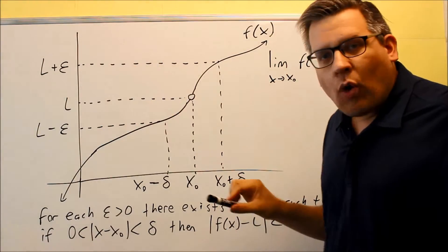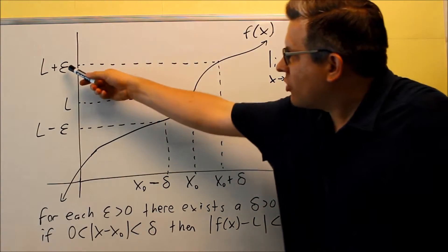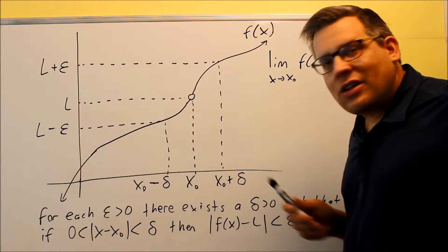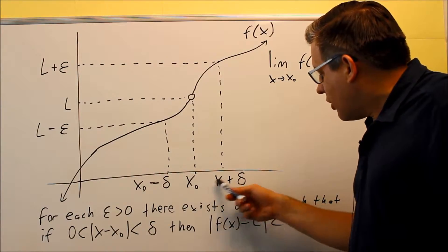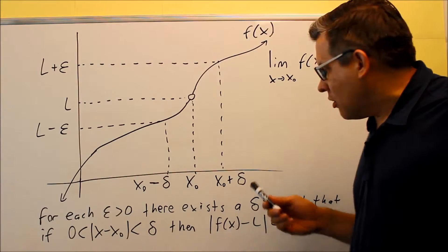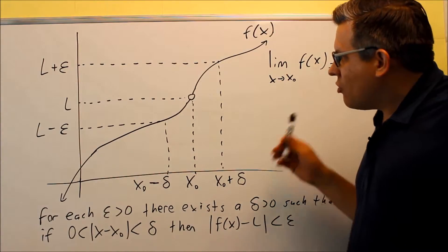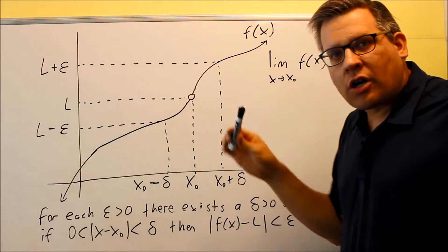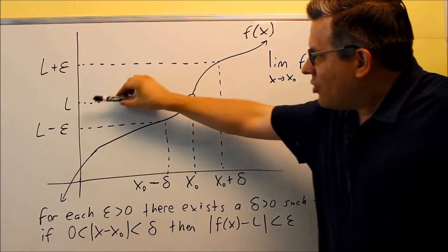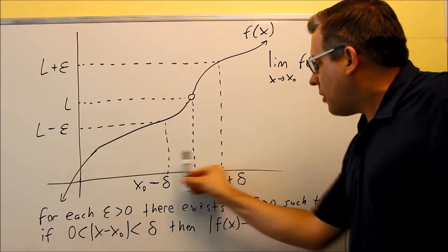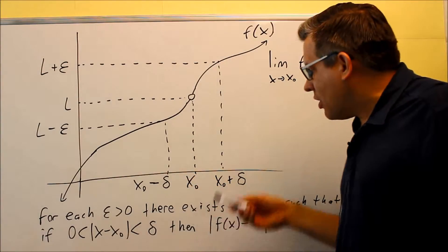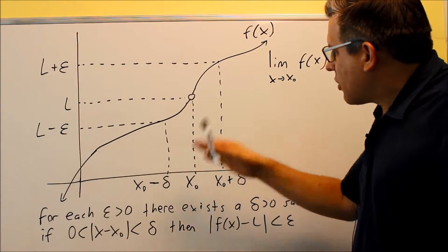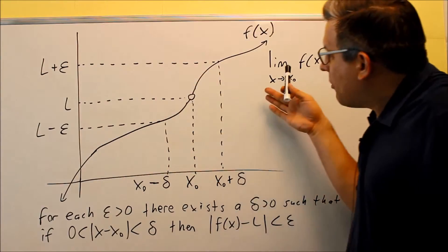Of course if there's a difference in the y direction, there's going to be a difference in the x direction as well. Epsilon is the difference in the y direction. This other letter here is delta — this is how much you're off in the x direction, meaning you're slightly above x₀ or slightly less than x₀. Delta is the difference in the x direction. So you get a range of values — if you're between L minus epsilon and L plus epsilon, you're automatically going to be between x₀ minus delta and x₀ plus delta.